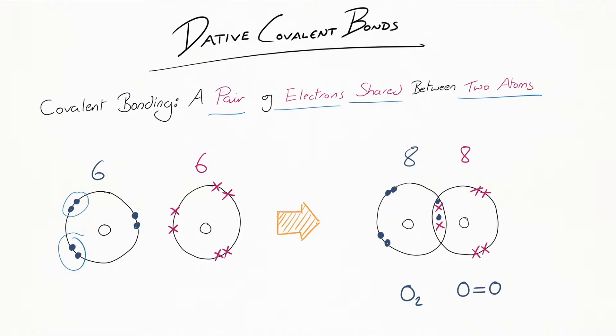Counting each electron—1, 2, 3, 4, 5, 6 on each atom. When they share two pairs of electrons, they each have eight electrons in their valence shells.